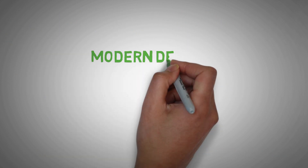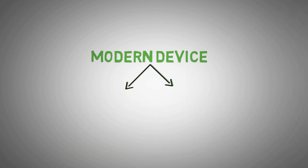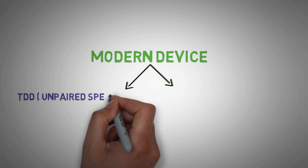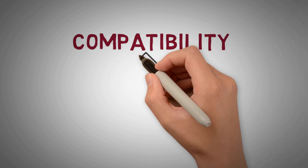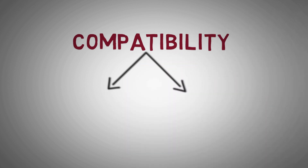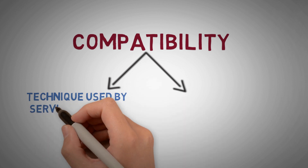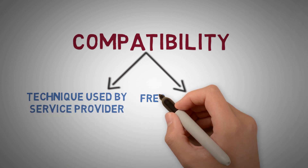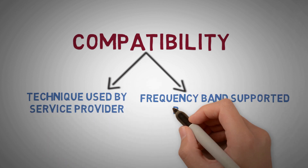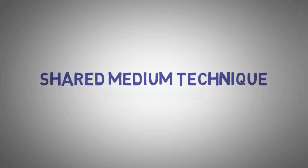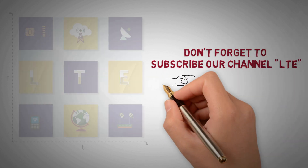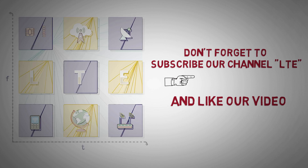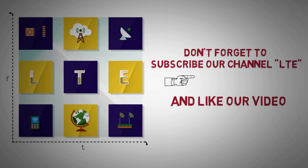Keeping an eye on the future market, modern devices are being manufactured to support both Time Division Duplexing and Frequency Division Duplexing. So next time you buy a smartphone, check which technique is used by your service provider and check the frequency bands supported. In the next video we will talk about shared medium technique — multiple access. Don't forget to subscribe, like our videos, and comment your views or suggestions. Thanks for watching — happy learning!